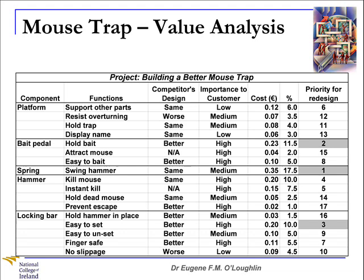In the next column, we have money. We list the cost in euro of each function as a proportion of overall cost. For example, for the platform component, we've allocated a cost of 12 cents for 'support other parts' and 7 cents for 'resist overturning.' For each function, we allocate a cost as accurately as possible.